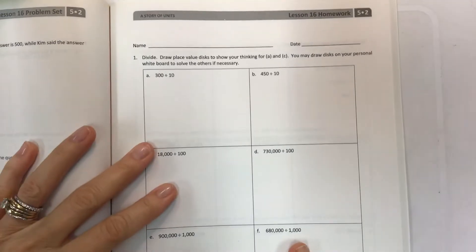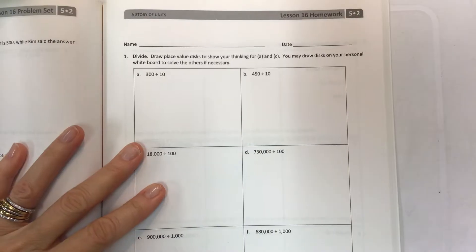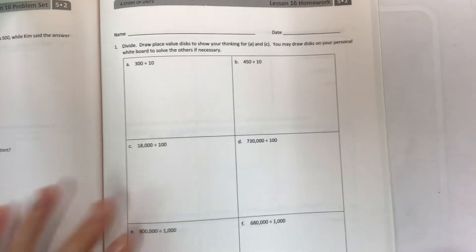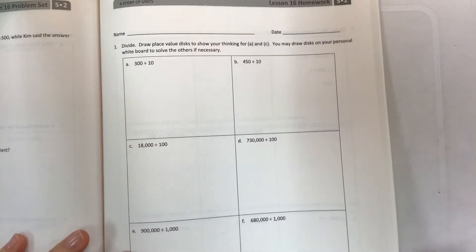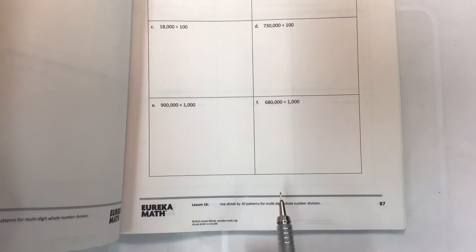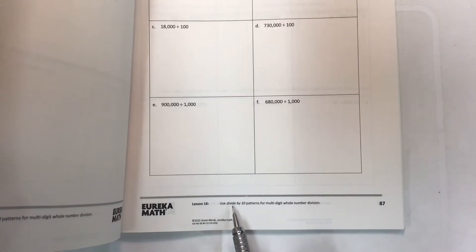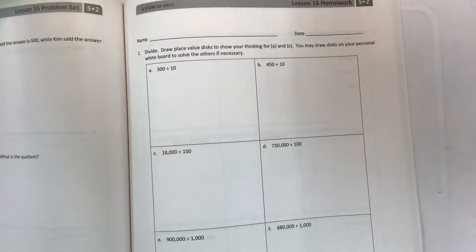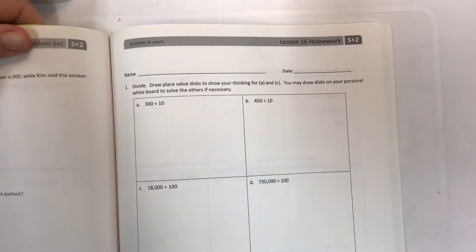Hey kids, welcome to another video. This is for grade 5 module 2 lesson 16 homework, and I would highly recommend you go watch the problem set video before you watch the homework video. The objective here is to use divide by 10 patterns for multi-digit whole number division, and the problem set video has some great examples and really good notes to help you understand what you're doing.